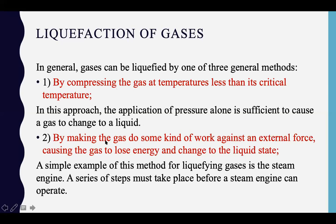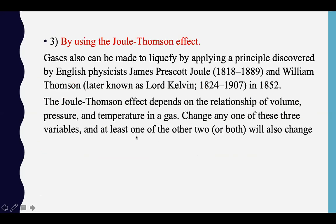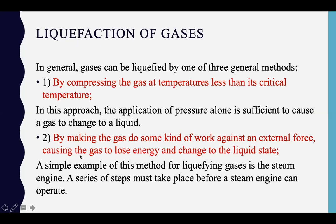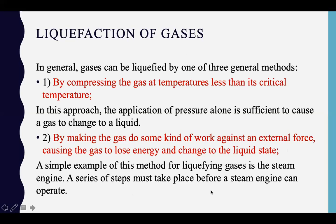The second method is by making the gas do some kind of work against an external force, causing the gas to lose energy and change to the liquid state. If you supply energy to a liquid, molecules gain energy, become free, and it becomes more volatile. But when you make the gas do work against an external force, the energy possessed by the molecules is lost in doing work, and hence they move toward the liquid state rather than the vapor state. A simple example is the steam engine, where vapor is turned into liquid again through a series of steps.